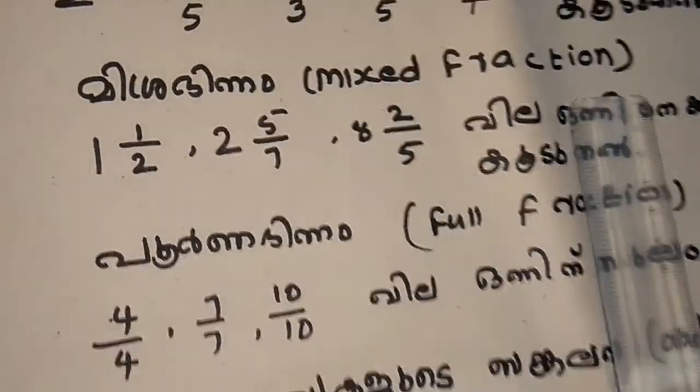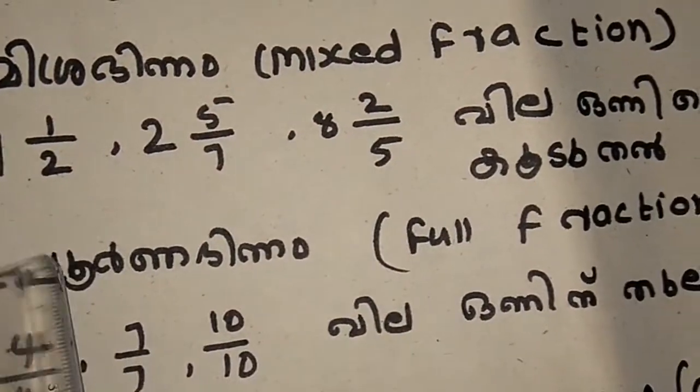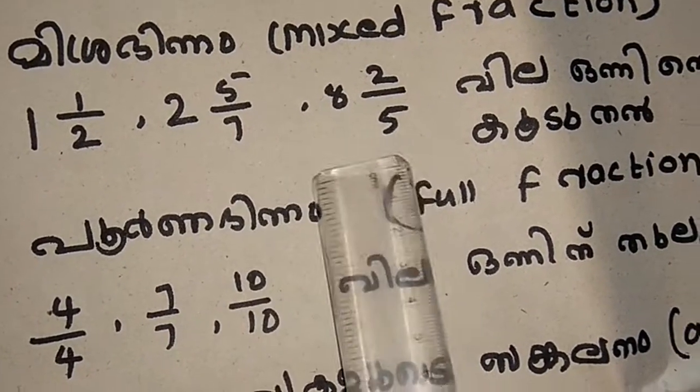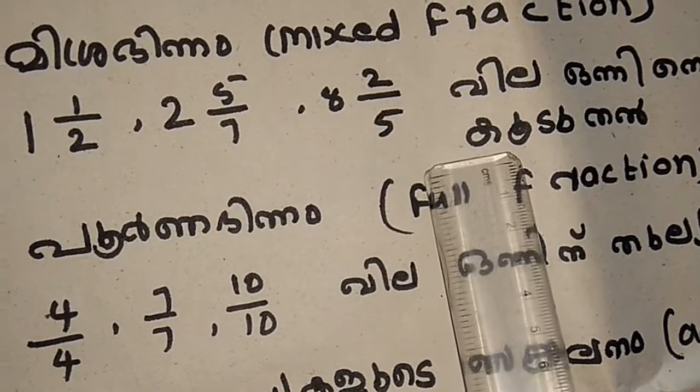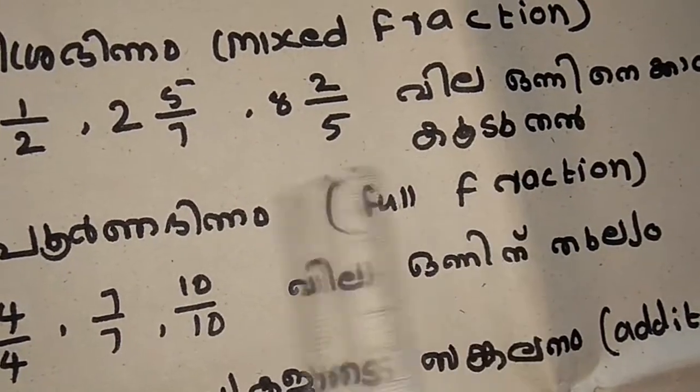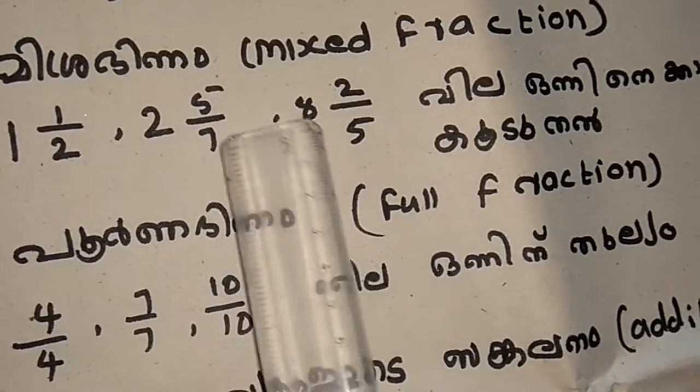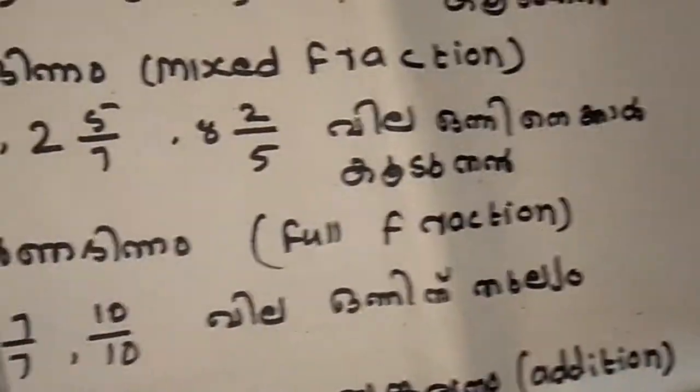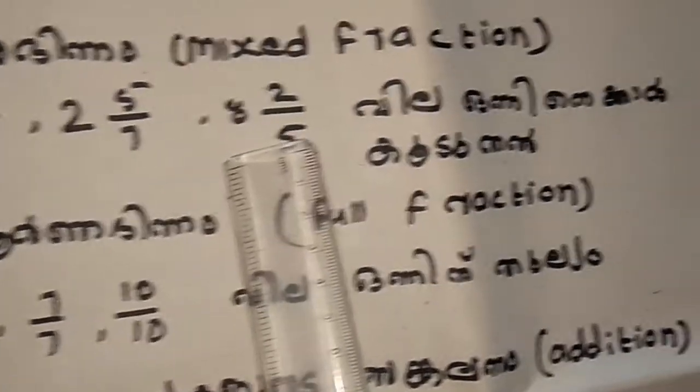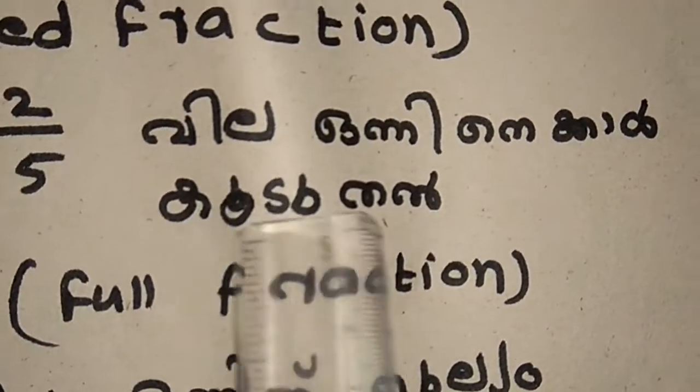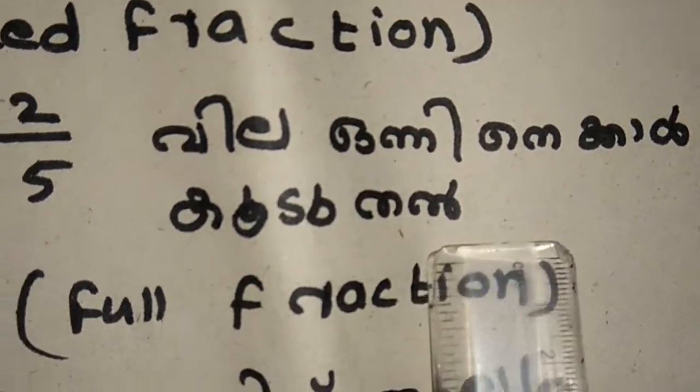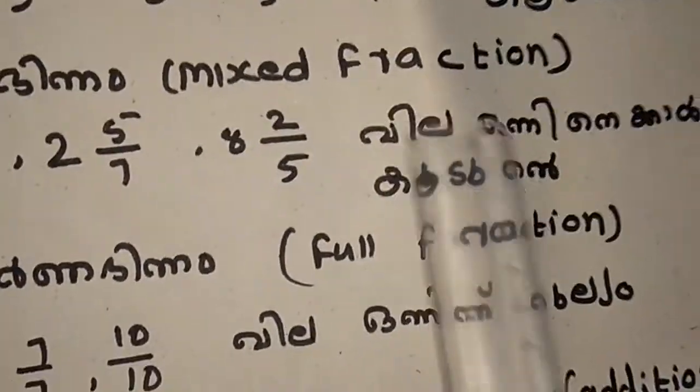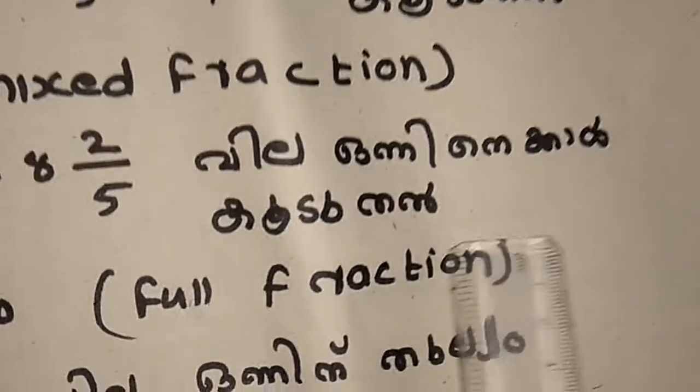The value of an improper fraction is more than 1. Mixer fraction: 1 1 by 2, 2 5 by 7, 5 2 by 5. Mixer fraction. The value of a mixer fraction is always greater than 1.